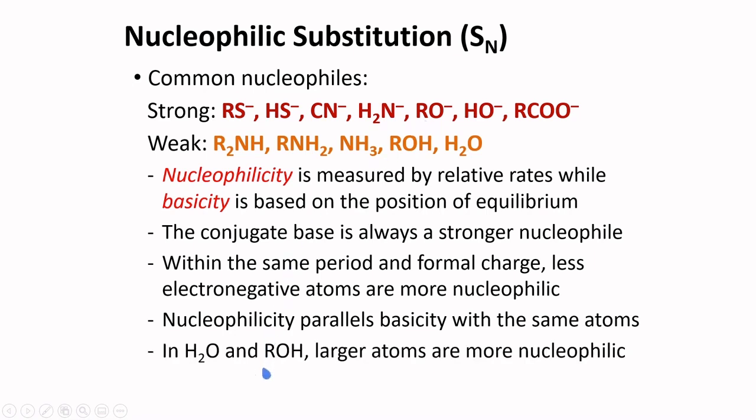In water and alcohols, these are polar protic solvents, larger atoms are more nucleophilic. Larger atoms are more polarizable, thus their electron clouds can be easily distorted towards an electrophile. Sulfur is bigger than oxygen, and this atom is more polarizable, and would be more nucleophilic in polar protic solvents.